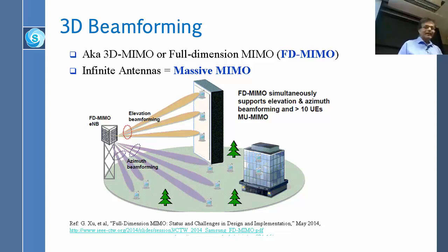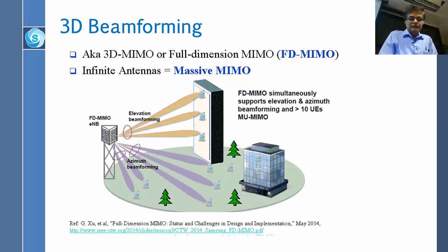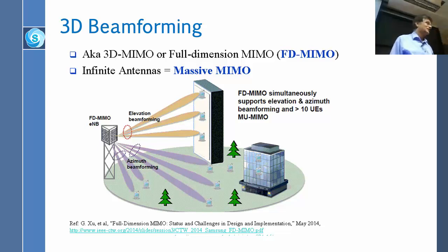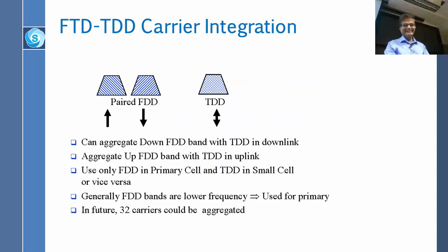3D beamforming is a special case of Full Dimension MIMO. You could have many more antennas and much more control — if you have a large number of antennas approaching infinite, it becomes Massive MIMO. 3D MIMO, Full Dimension MIMO, and 3D beamforming are essentially the same concept. The key point is that we must worry about users not just in the horizontal direction, but also vertically since they may live on higher floors.